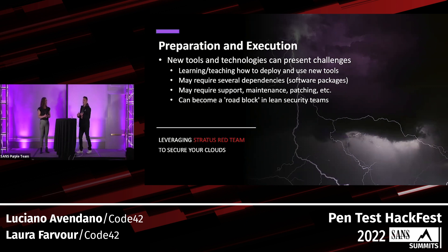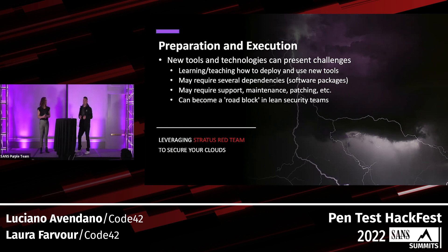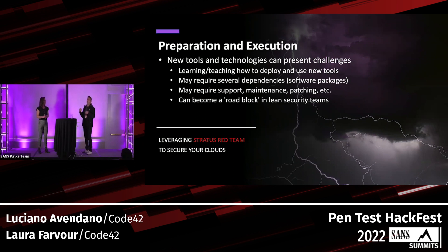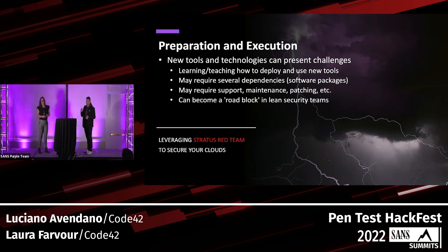Preparation and execution: taking a new tool and getting it approved through procurement and leadership can take time, especially when others need to learn it. Tools may require dependencies, support, maintenance, patching. If it's a commercial tool, it requires a lot of finesse. It can become a roadblock in lean security teams — when you have two to three security members, it's difficult to teach and hand off duties when someone is absent.